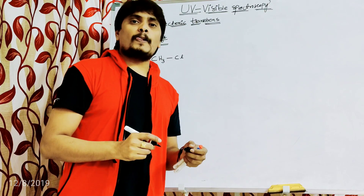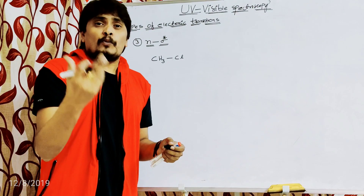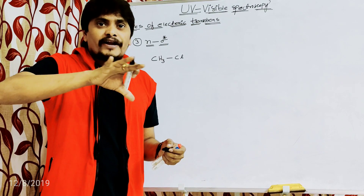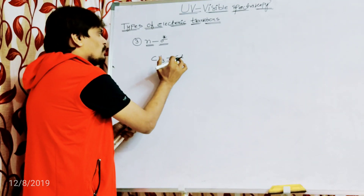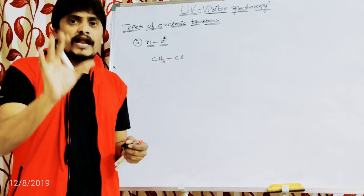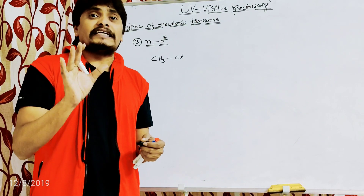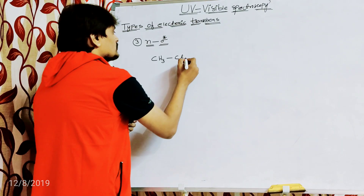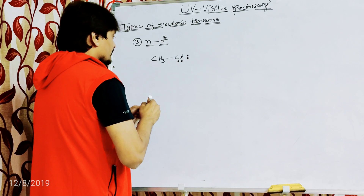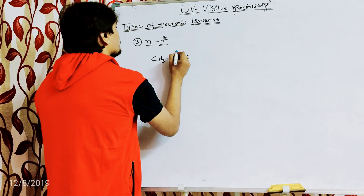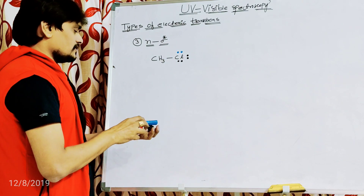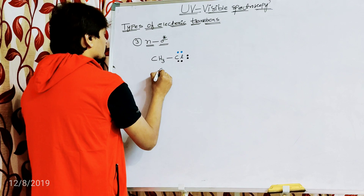Chloromethane undergoes n to sigma star transition. Chlorine belongs to group 7, so it has 7 electrons around it. One is participating in bonding with carbon, and the remaining 6 electrons are around the chlorine in the form of 3 non-bonding pairs of electrons. I am representing two of these electrons with blue color. This is chloroform — chloromethane.